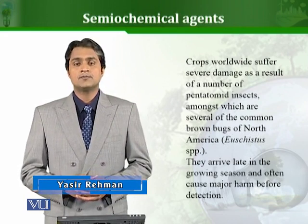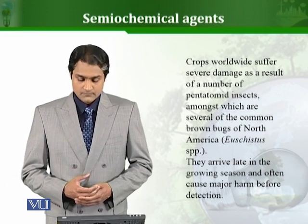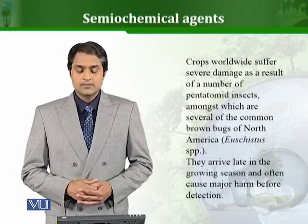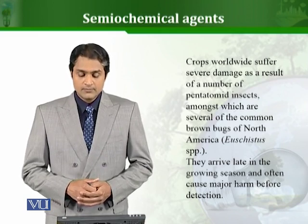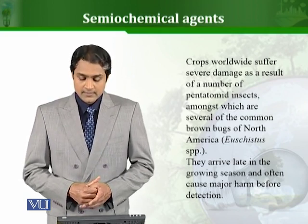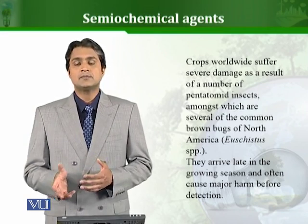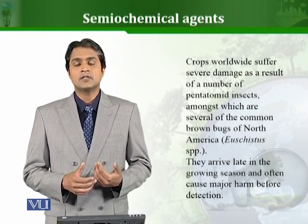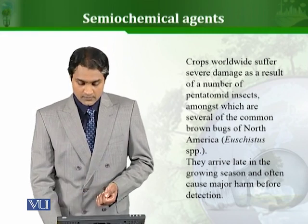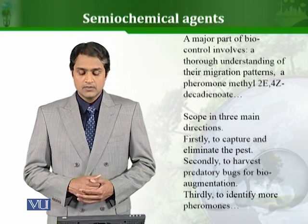Crops worldwide suffer a lot of damage due to different insects and pests which feed on them. Examples here are quoted from North America — brown bugs, which are pentatomid insects, cause a lot of problems against many crops in North America. They arrive late in the growing season and often cause major harm before detection. Scientists try to find a biological way to control these bugs. A major part of biocontrol involves a thorough understanding of their migration patterns.